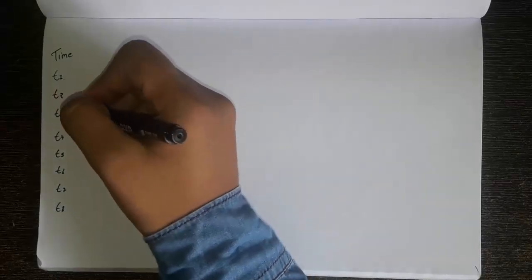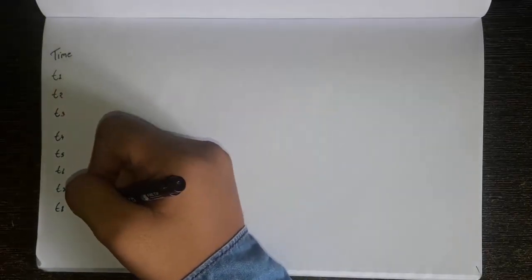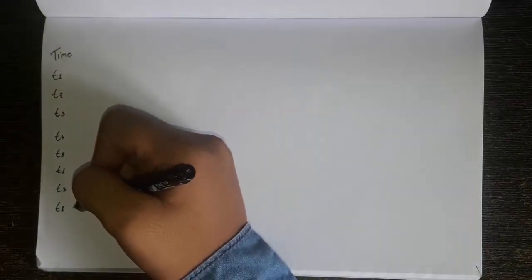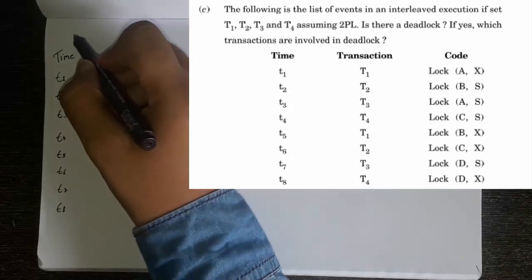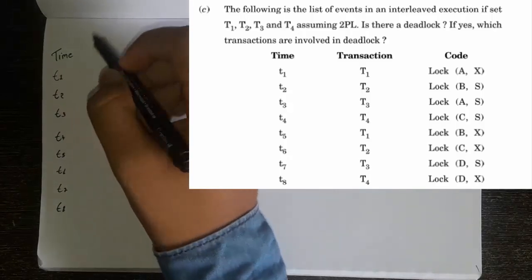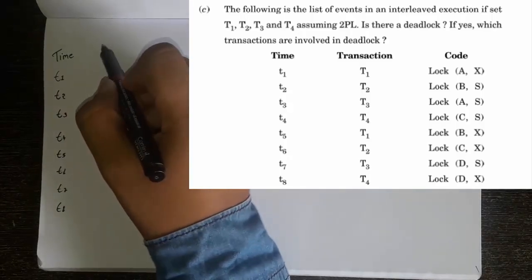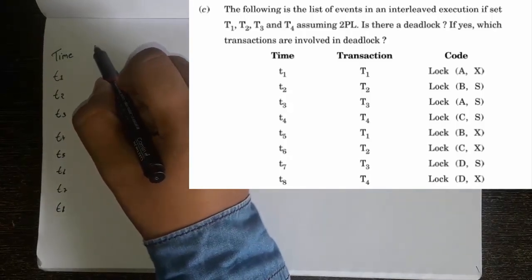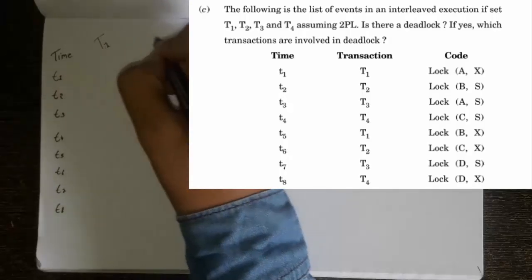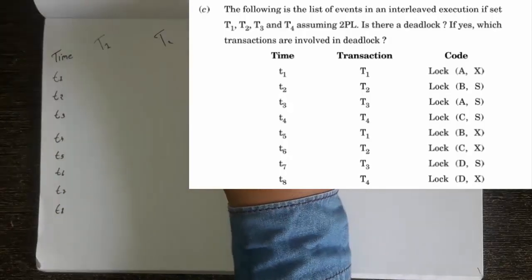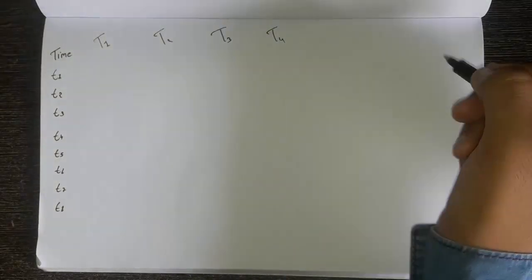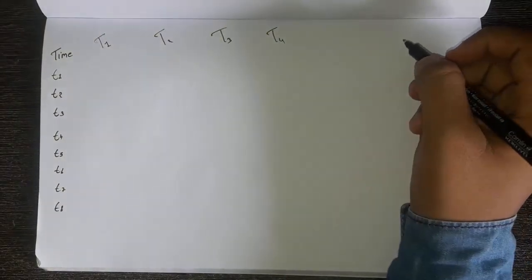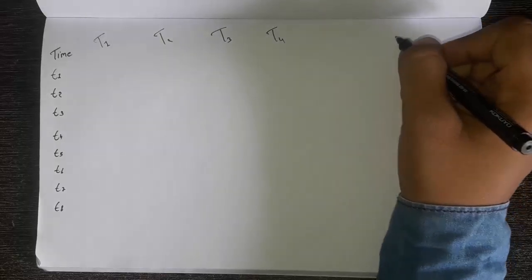So first, what you have to do is write all eight time slots given in the question. Then write the transactions. So this is the time, and for the transaction you can see there are four transactions: capital T1, T2, T3, and T4. Make a small diagram on the side so you can see.